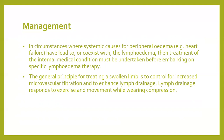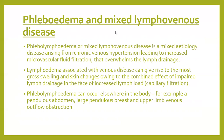The third topic is phlebolymphoedema or mixed lymphovenous disease, conditions in which both venous and lymphatic drainage play a part. Phlebolymphoedema is a mixed etiology disease arising from chronic venous hypertension, leading to increased microvascular fluid filtration that overwhelms lymphatic drainage. The lymphedema associated with venous disease can give rise to more gross swelling and skin changes due to the combined effect of impaired lymphatic drainage and increased lymphatic load. Phlebolymphoedema can occur elsewhere on the body, for example in a pendulous abdomen, large pendulous breasts, and upper limb venous outflow obstructions.